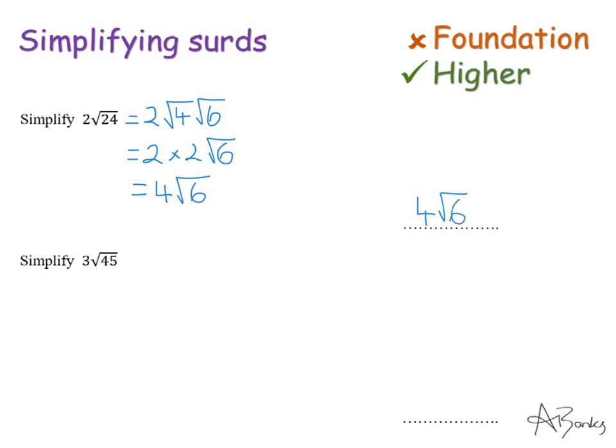It's a similar process with this next one. So I'm just going to leave the 3 at the front. And then what's the biggest square number that goes into 45? Well, it's 9. And that's going to be root 9 root 5. And then I've still got my 3. Root 9 is 3. So times 3 root 5. So 3 times 3 root 5 is 9 root 5. And that is my answer.